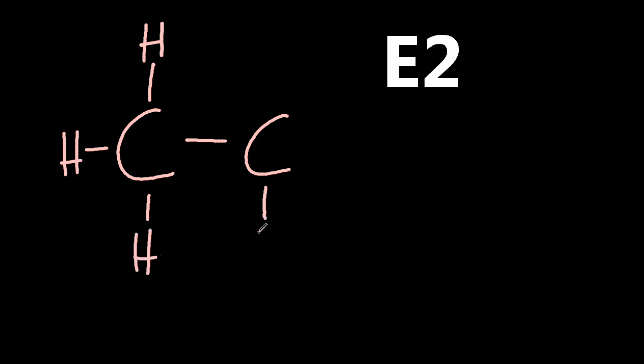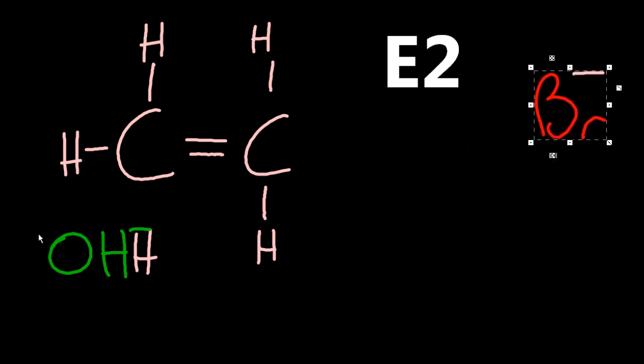E2, well, that's a one-step process. So all of this is happening in one step. As that goes there, and that goes to become a double bond, those electrons go there, and that's made water. So that's all in one step.